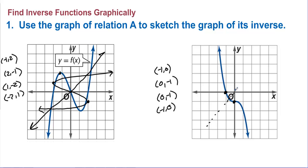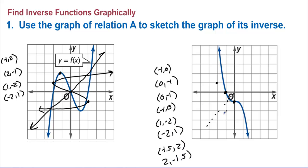Getting a few more points: (1, negative 2) on the original gives (negative 2, 1) on the inverse. Also (negative 1.5, 2) on the original gives (2, negative 1.5) on the inverse. Using these points we can now draw the inverse — going through each plotted point and completing that curve.